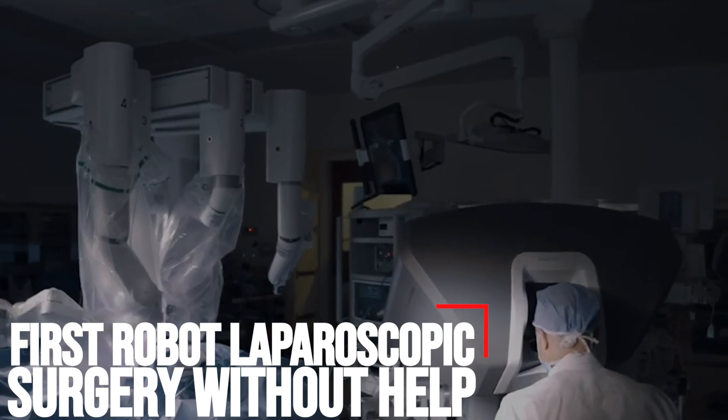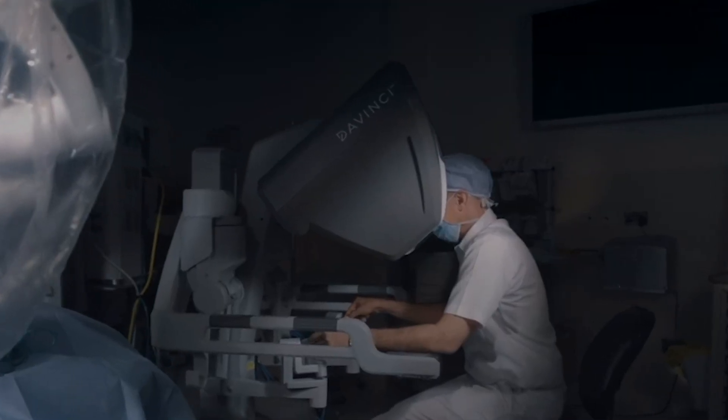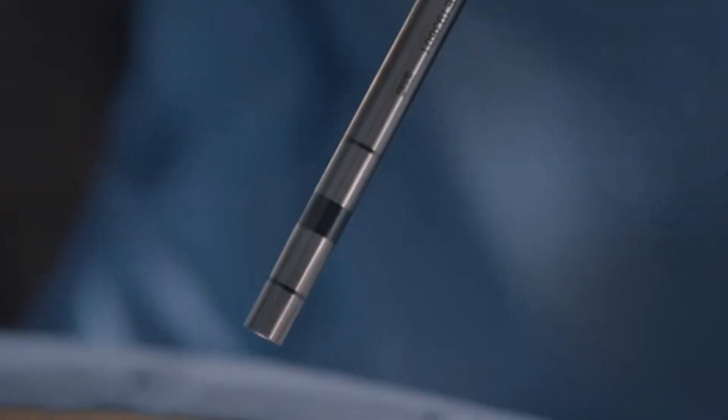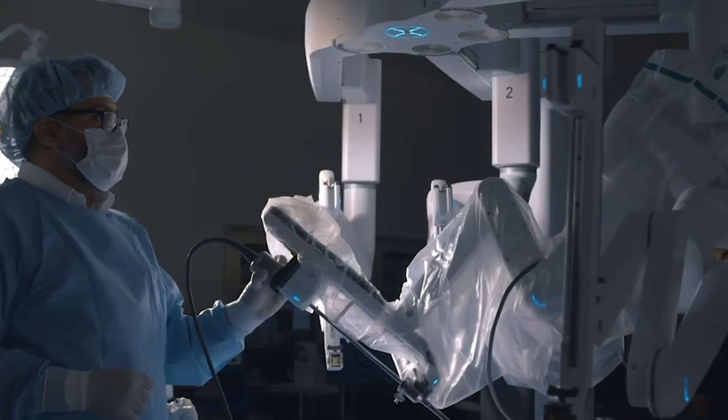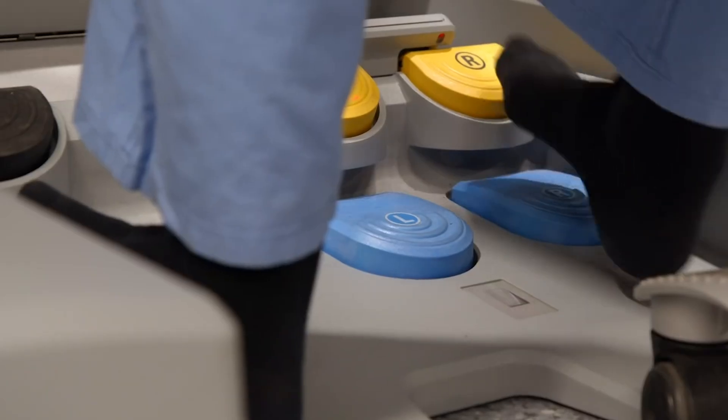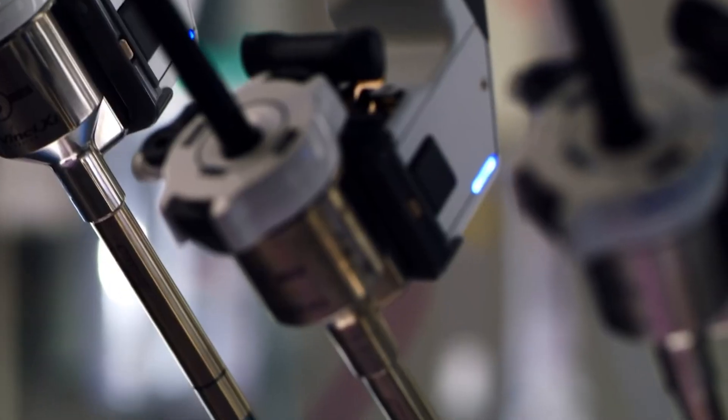First Robot Laparoscopic Surgery Without Help. A robot has performed laparoscopic surgery on the soft tissue of a pig without the guiding hand of a human, a significant step in robotics toward fully automated surgery on humans. Designed by a team of Johns Hopkins University researchers, the Smart Tissue Autonomous Robot, or STAR, is described in Science Robotics.